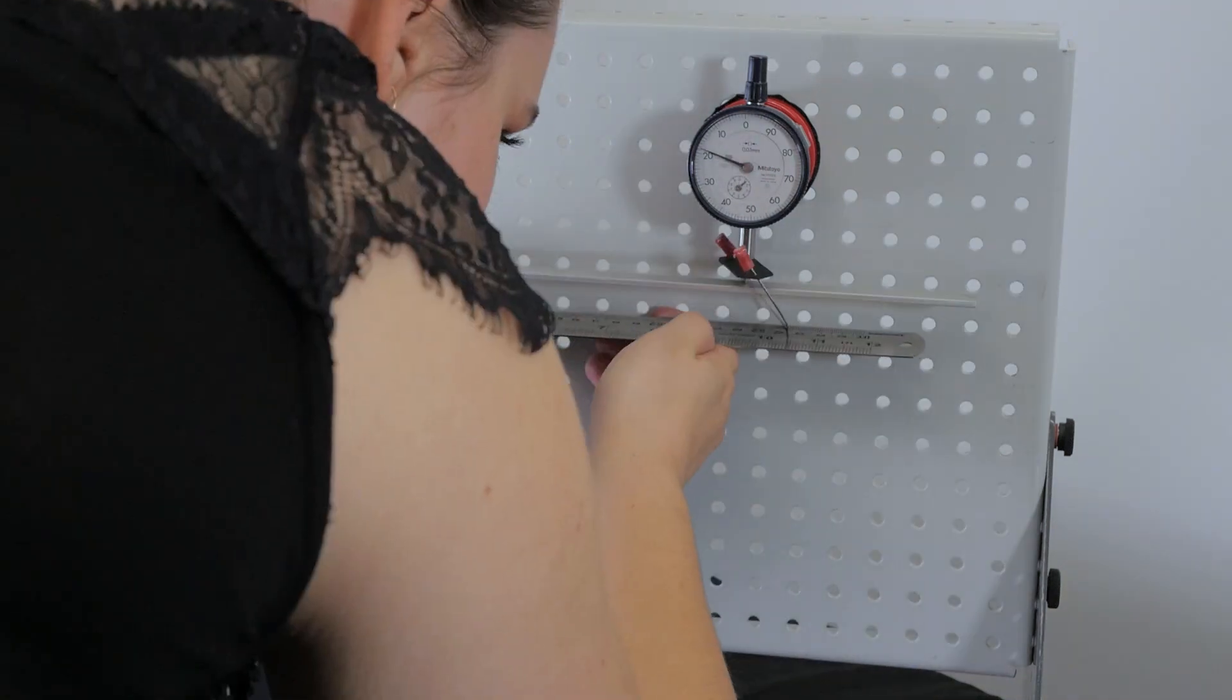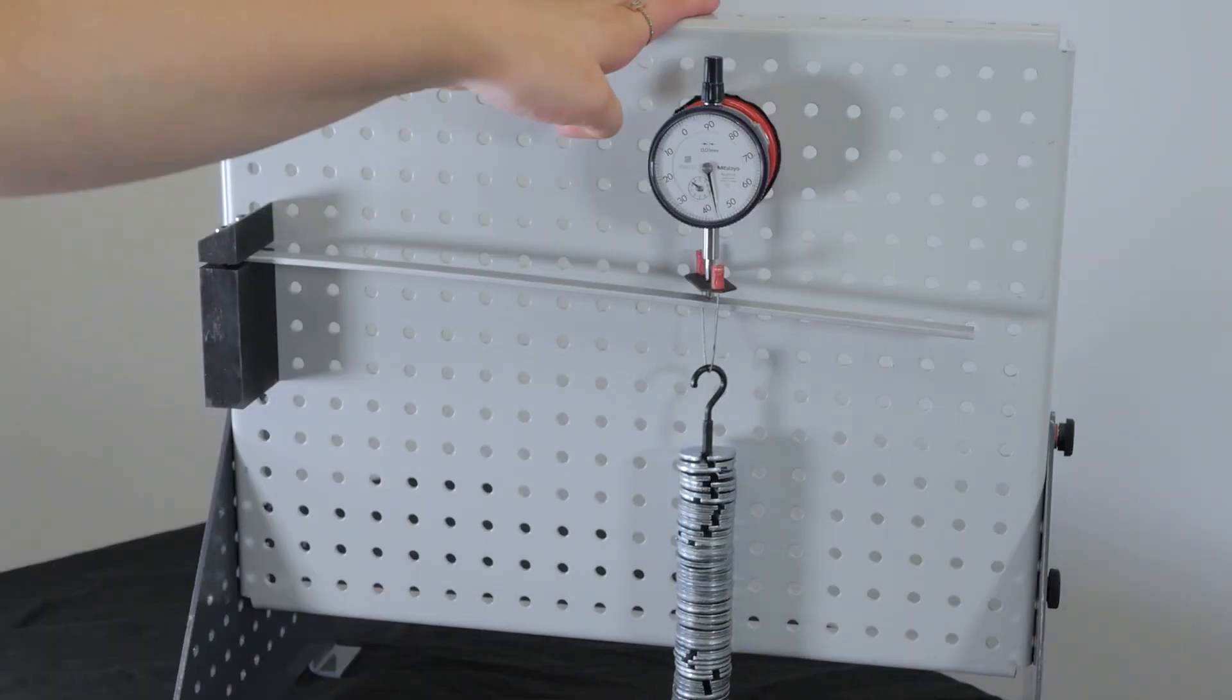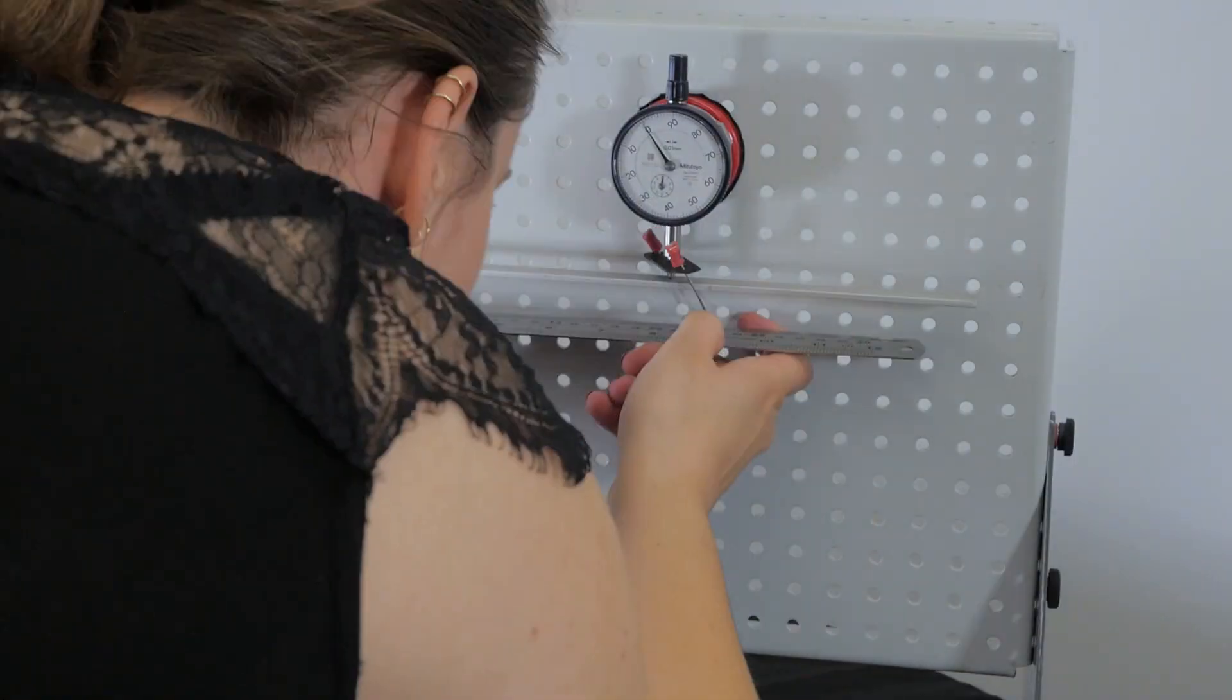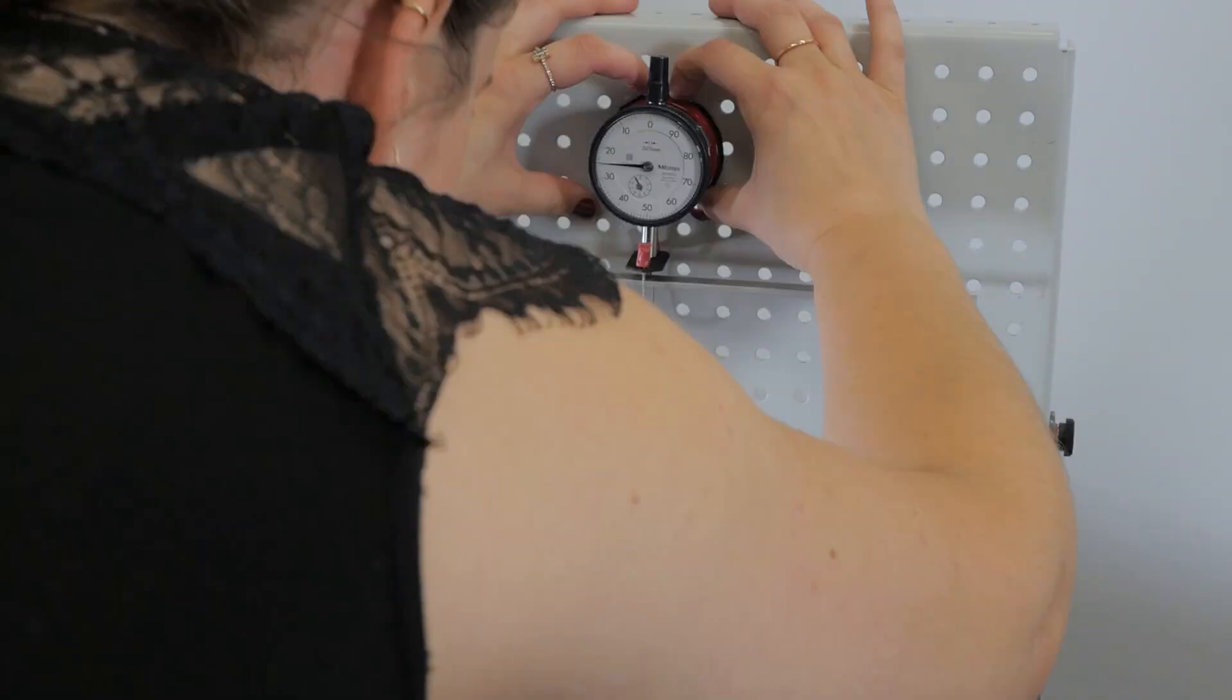Repeat this process for different distances at 230, 210, 190, 170 and 150 millimetres. Remember to zero the dial indicator after each move.